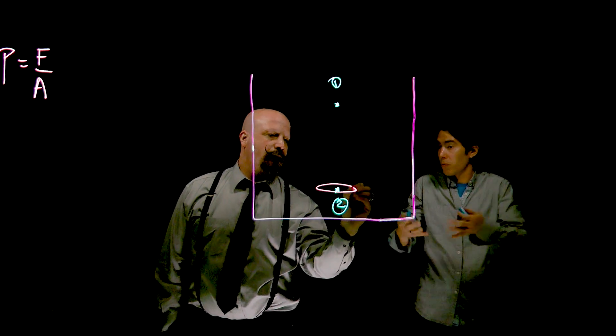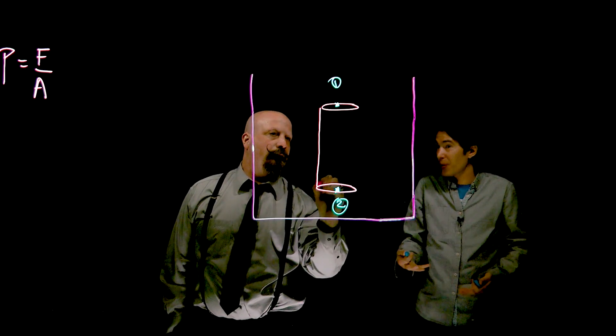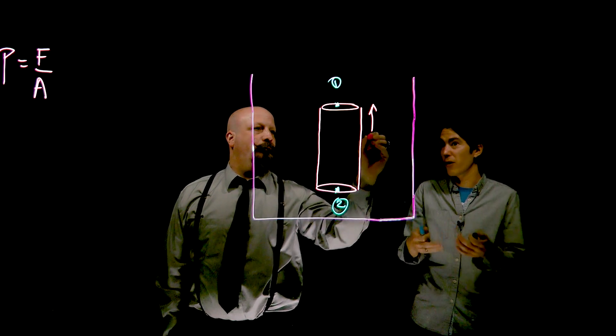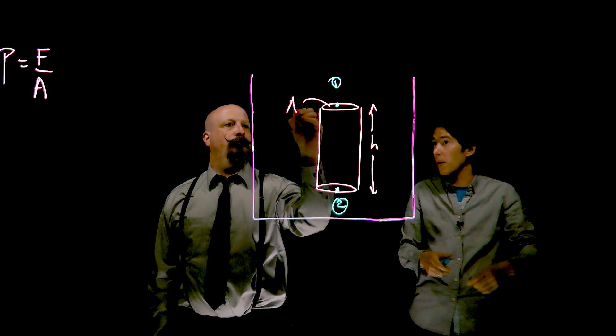Now, the reason for that is because really at the bottom of the pool, there's extra weight of water on you. So the best way to see that is to look at a column of water, a plug of water of some height h that is the difference in height between point 1 and point 2.